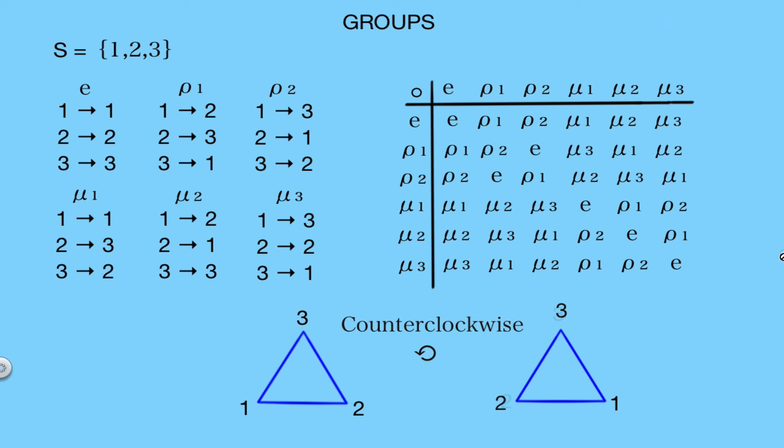Another permutation we looked at sent 1 to 2, 2 to 1, and 3 to 3. This would be represented by reflecting the triangle around the axis of symmetry.